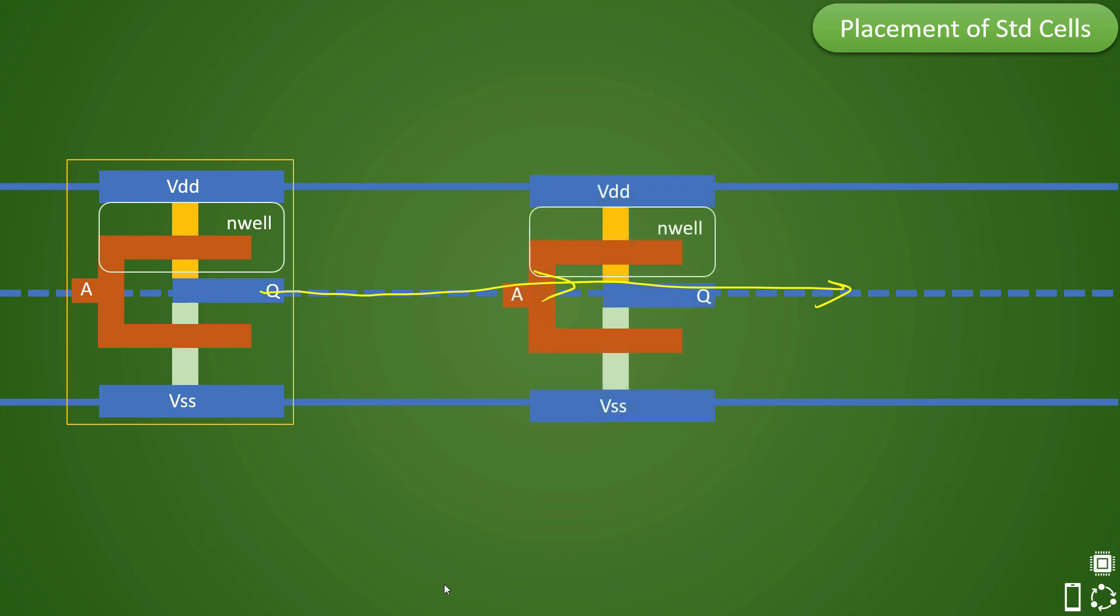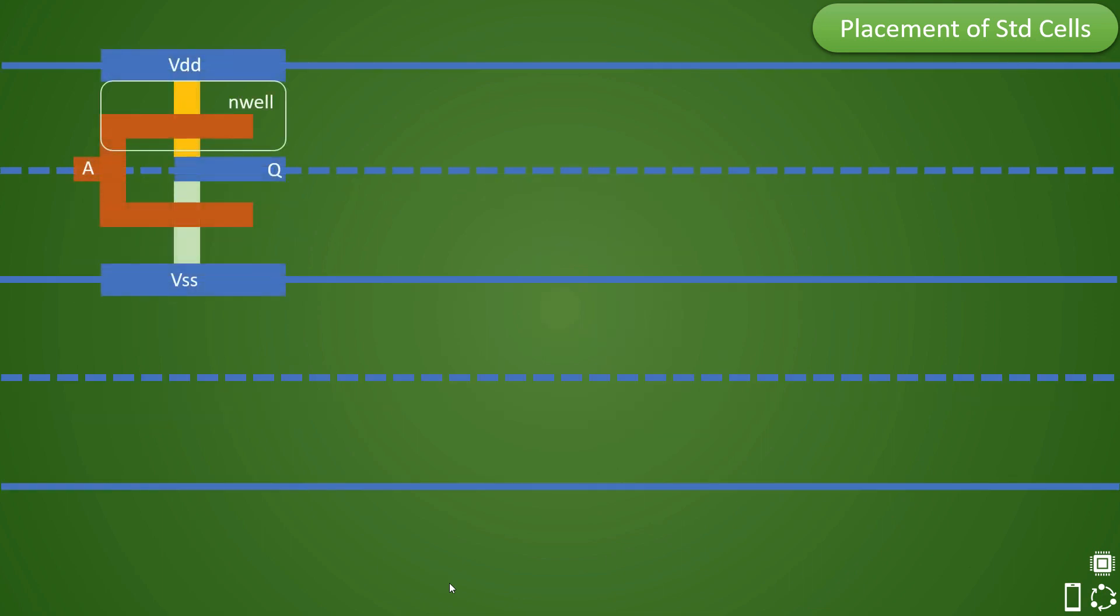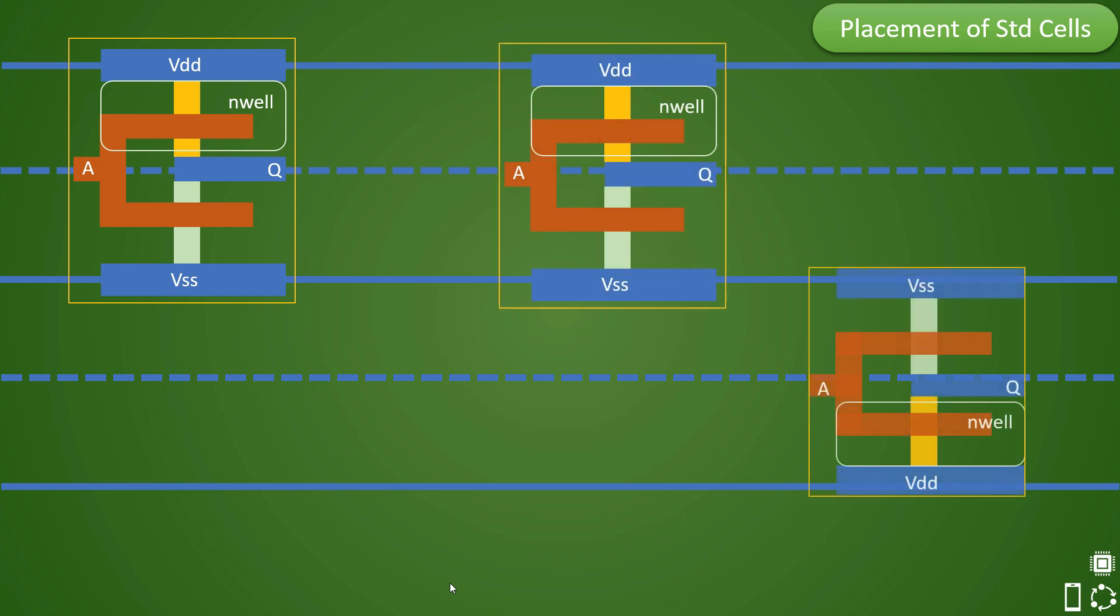Now let us assume if there is some more cell sitting nearby, then it is possible that tool will not be able to simply route like earlier case and it will have some detour in the net and that detour means there is an extra effort. If there are more and more cells nearby, then router has to detour more and more and that is an extra computational effort.